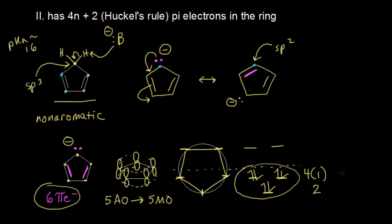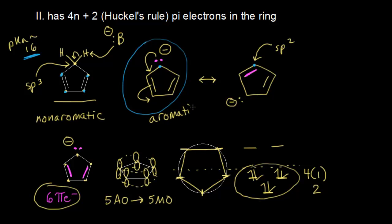This ion satisfies both criteria: it contains a ring of continuously overlapping p orbitals and it has 4n+2 pi electrons in the ring. So this conjugate base is stable because it's an aromatic anion, which is the reason for such a low pKa value for cyclopentadiene. Even though cyclopentadiene itself is non-aromatic, this ion is aromatic, which explains its stability.